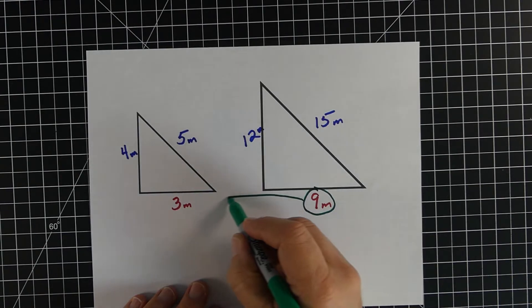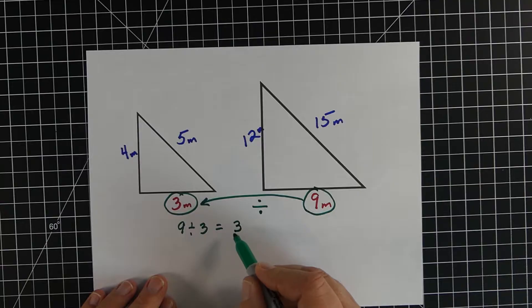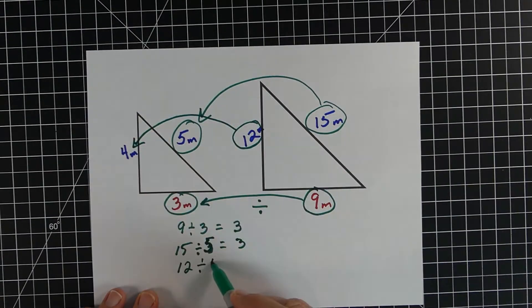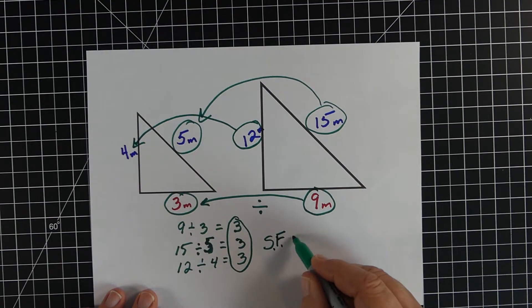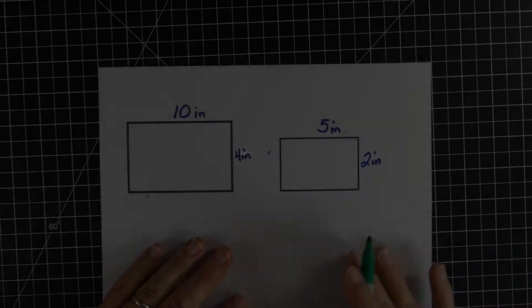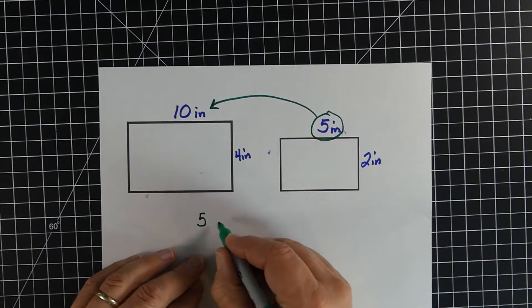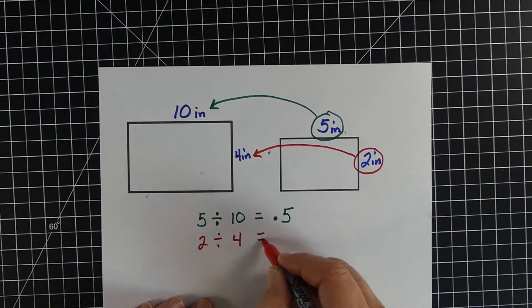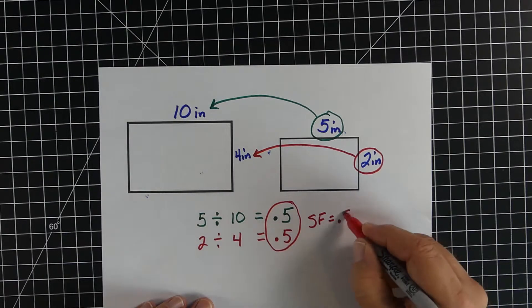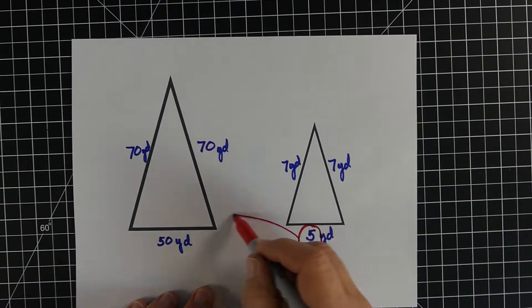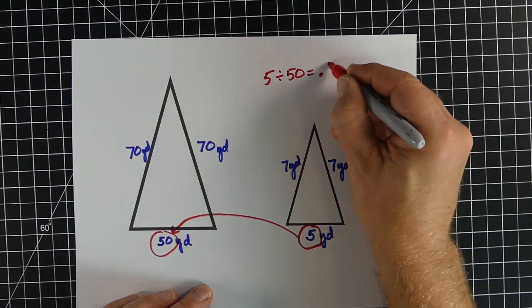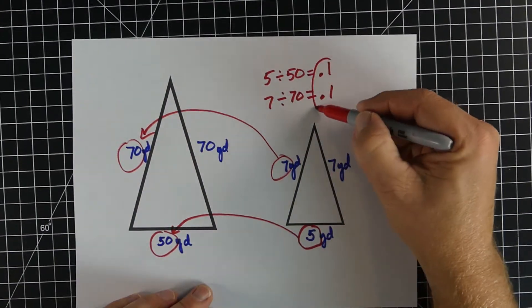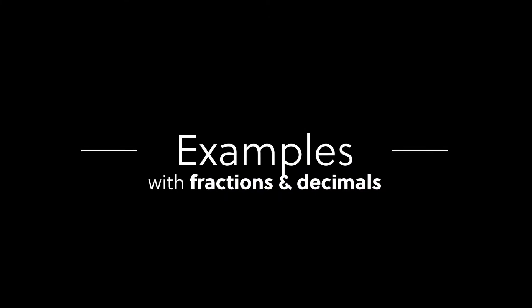Here are three more examples. In this example we have two similar triangles. To get the scale factor, it's the same thing — the scaled object divided by the original — and every single time we get 3, so our scale factor is 3. Second example: same thing, taking the new object divided by the original. It's gotten smaller, so it has a scale factor of 0.5. Third example, another triangle that's getting smaller, and we get 0.1. For it to be similar, we should get the same number every time — so it's a scale factor of 0.1.